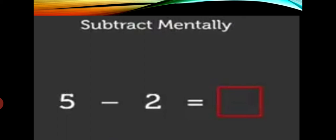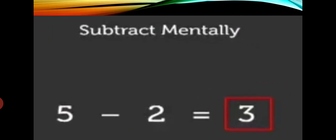Now, subtract mentally — you just think. For example, 5 minus 2. You don't have to use dots, lollipops, or number lines. Just think. You have 5 and you have to subtract 2, so you do back counting 2 numbers. What comes before 5? 4. And what comes before 4? 3. In this way, you did back counting 2 numbers. So your answer will be 3. 5 minus 2 equal to 3.